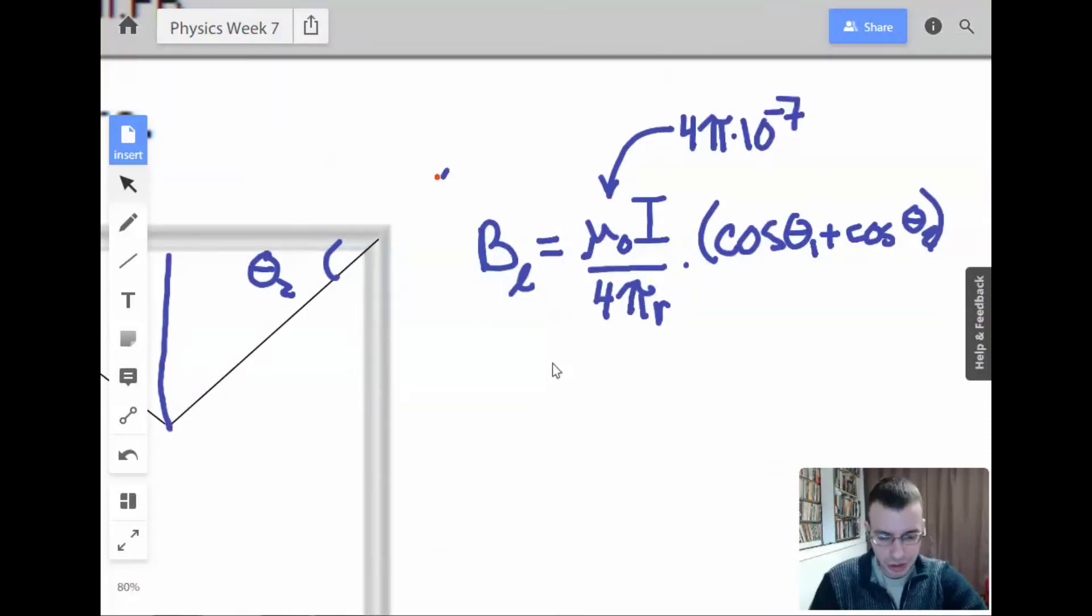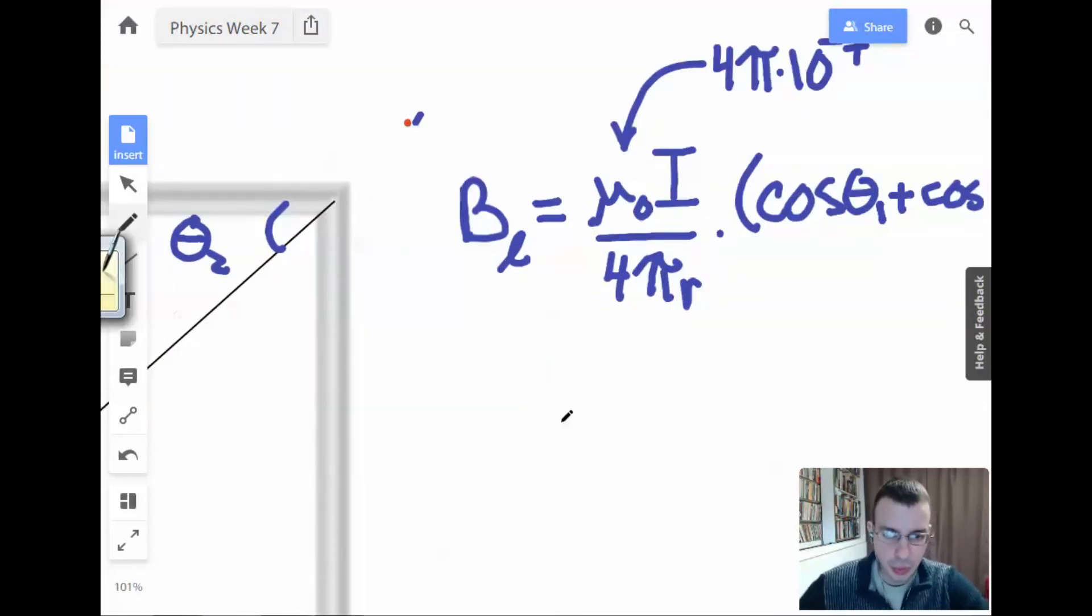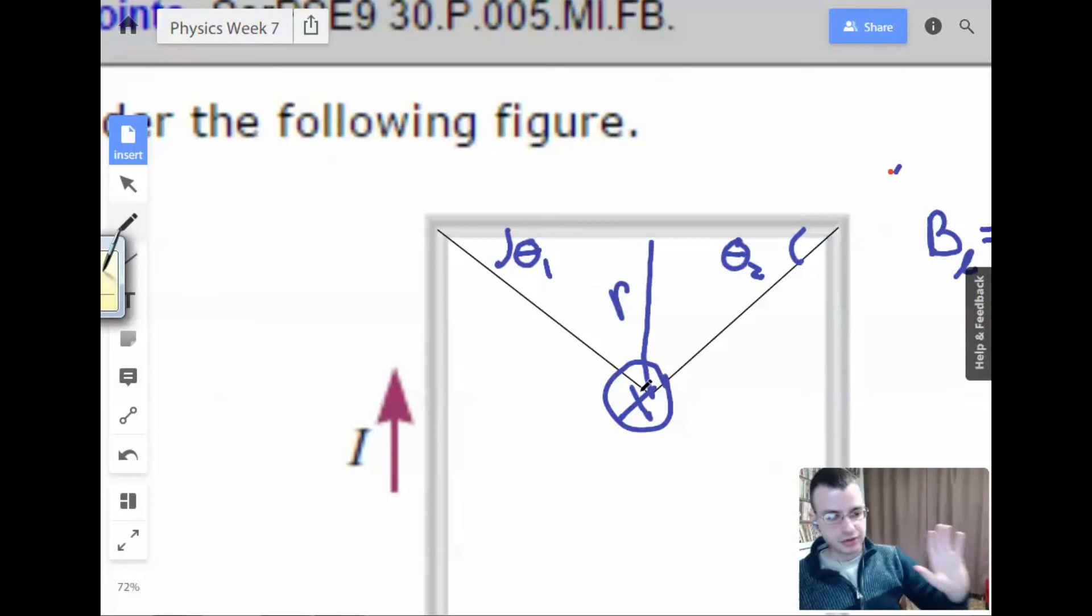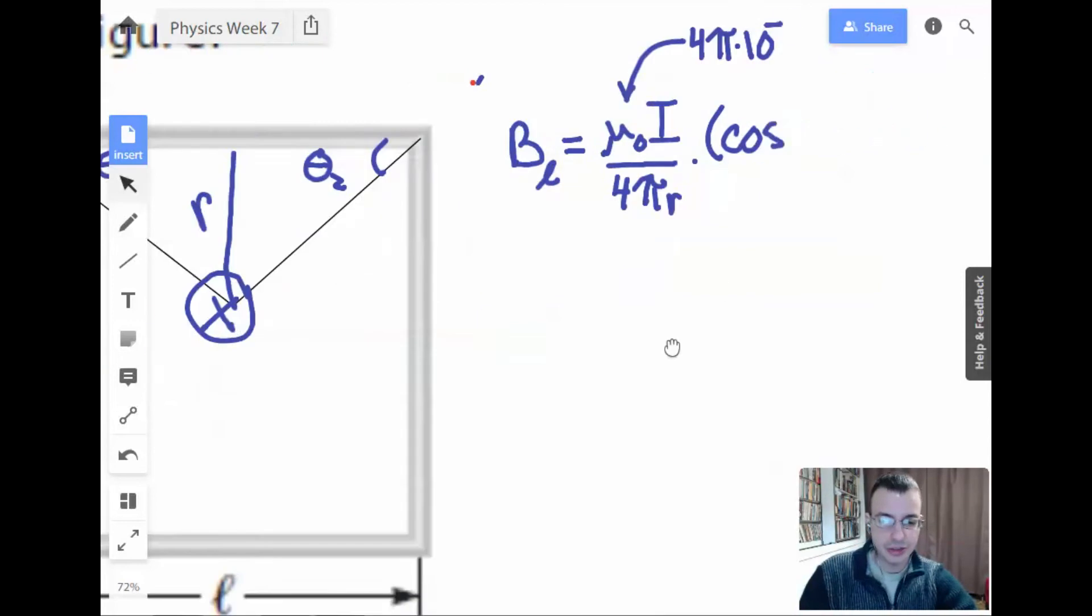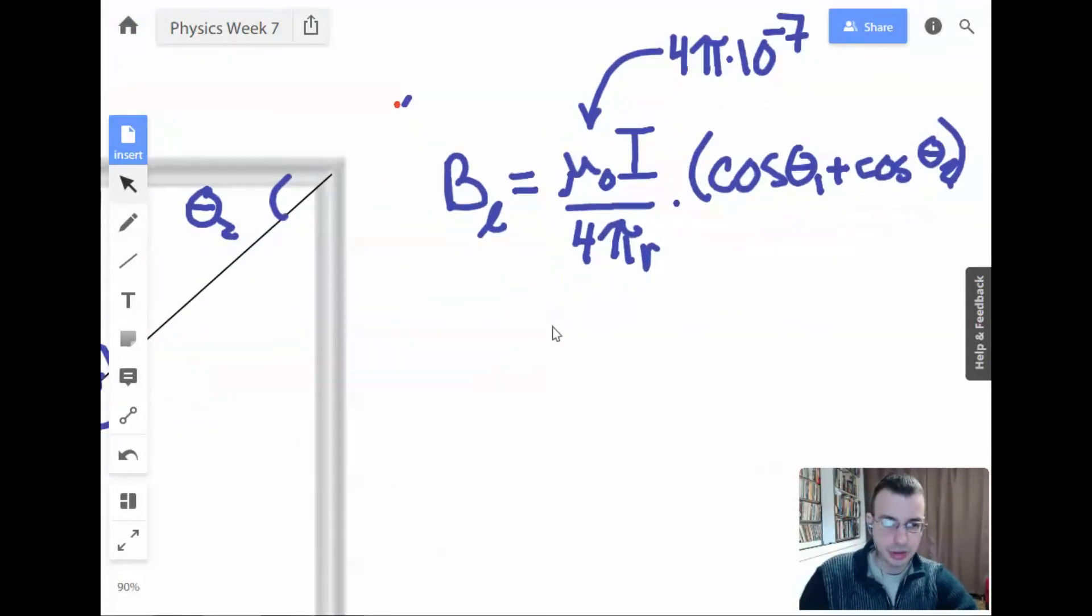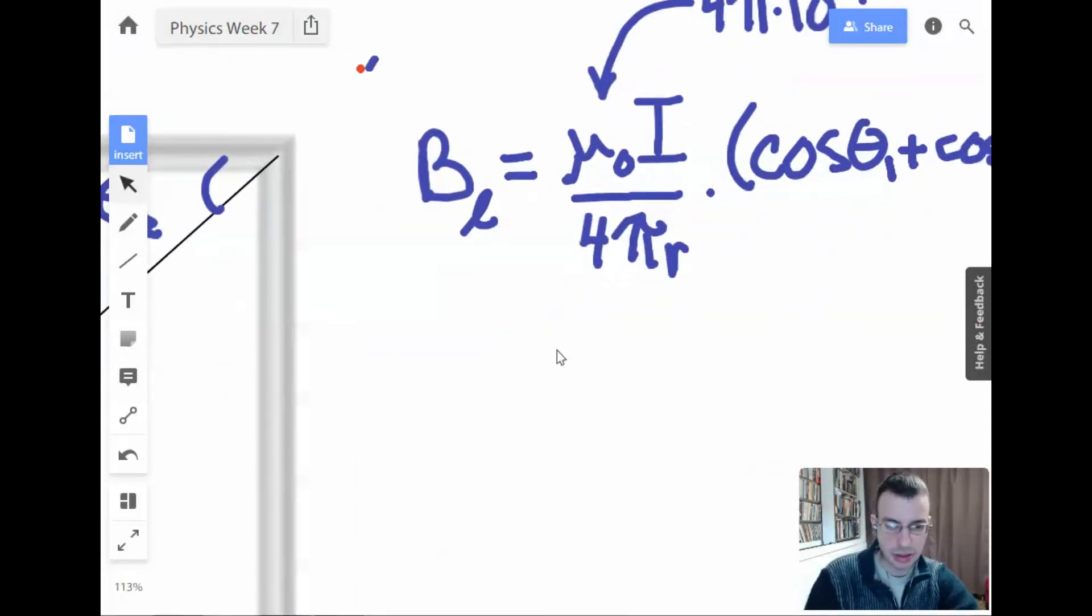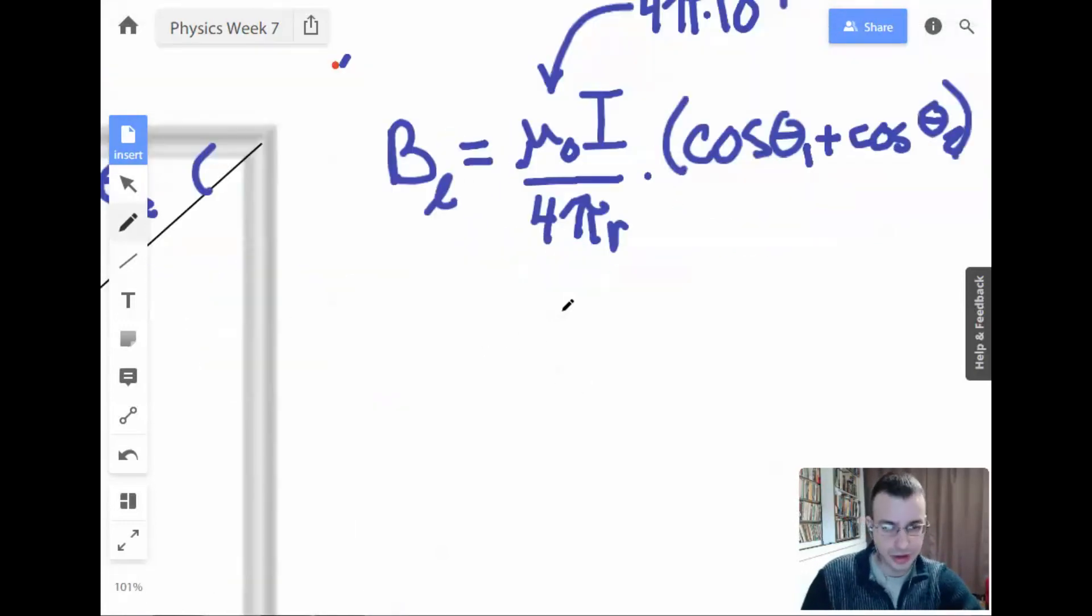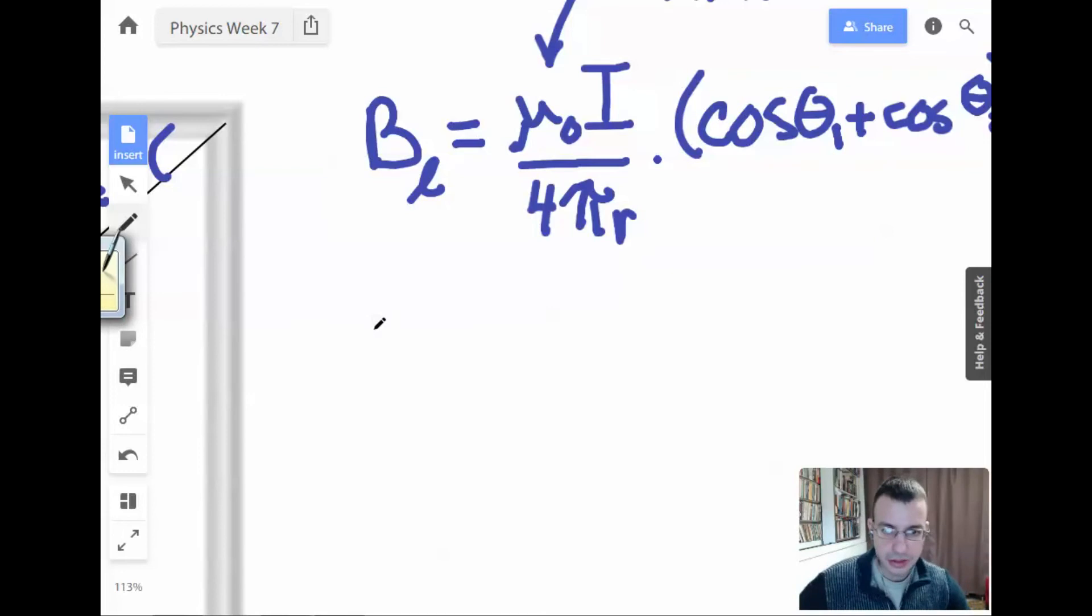Looking at this conceptually, we're looking at the first line, the top line. Wrap your fingers around. The magnetic field at the center is going to be going into the board. And you can do that for each side. For each line, the magnetic field is going to be going into the board. And since it's a square, each of these is going to be 45 degrees.